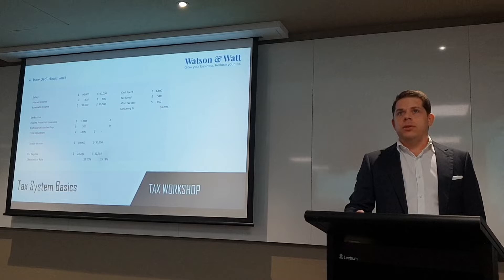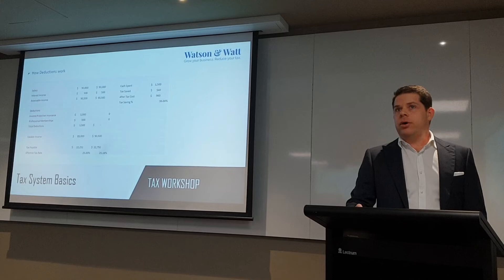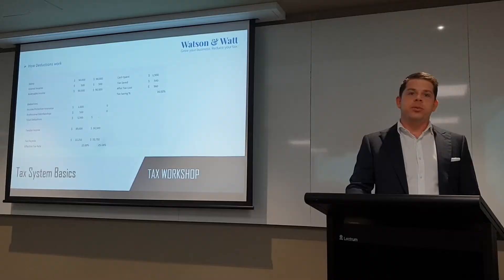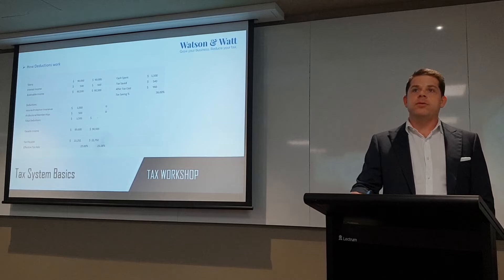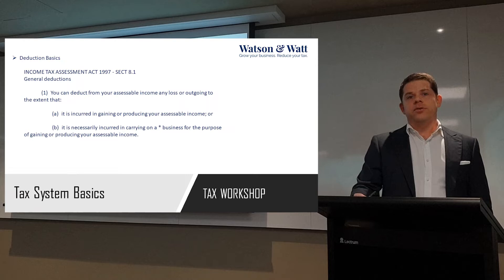This is how deductions work. One of the things I hear a lot is 'I'll just write that off on tax,' but deductions are only as good as your tax rate. If you've got $90,500 of income, you pay $22,792 in tax. If you have $1,500 of expenses, you'll pay $540 less tax, but you'll still be out of pocket $960. So yes, you'll be able to write those expenses off on tax, but you're still out of pocket 64%. Just because you get a tax deduction for something doesn't mean you're better off, because you've already spent the cash. Businesses have a broader definition of what can be claimed because it's necessarily incurred in carrying on a business, while individuals have a tighter regime on what they can claim.